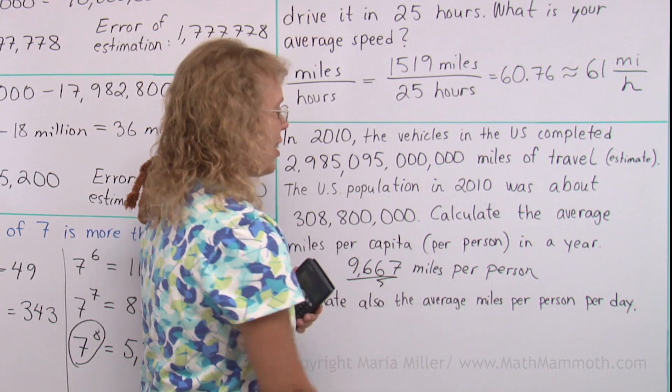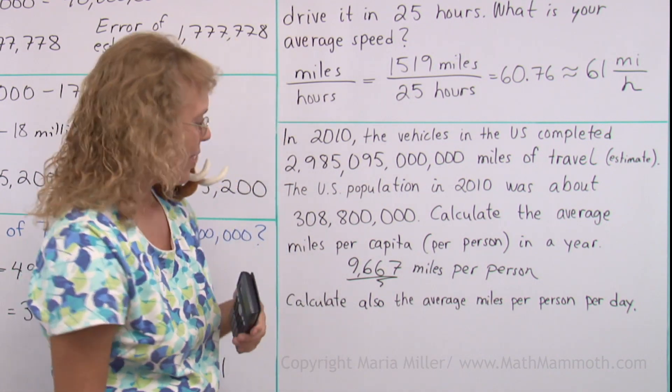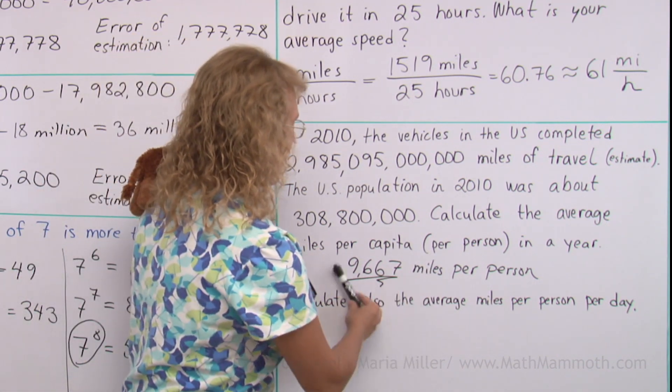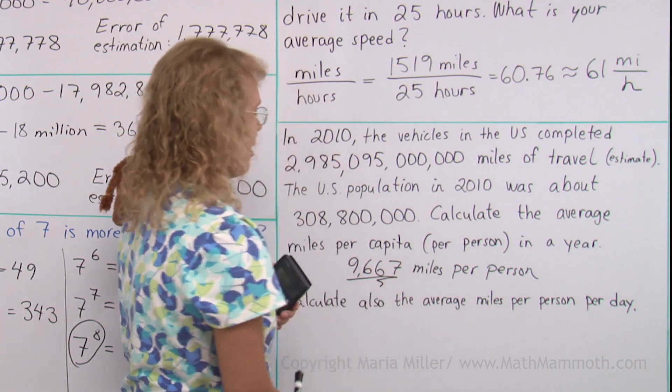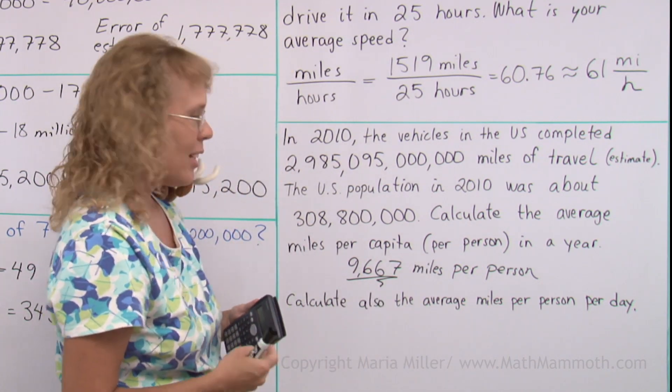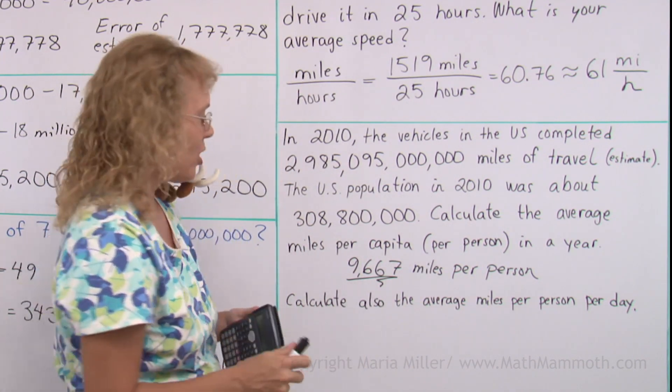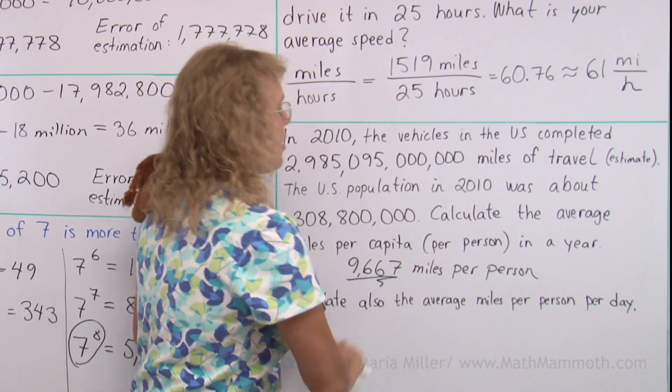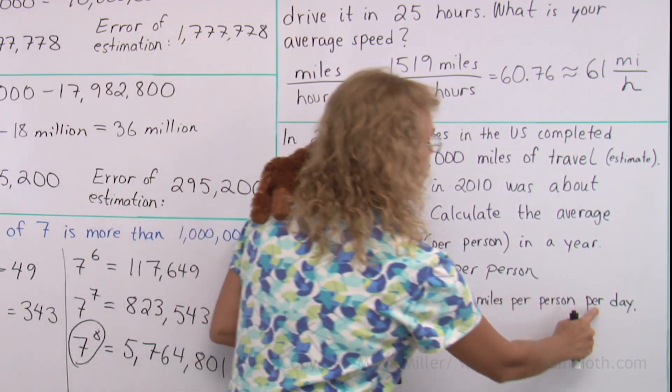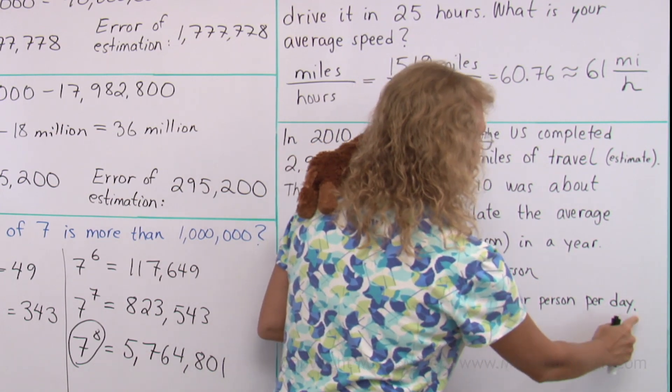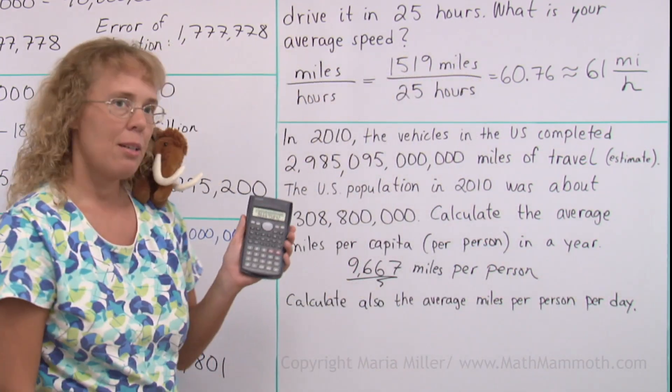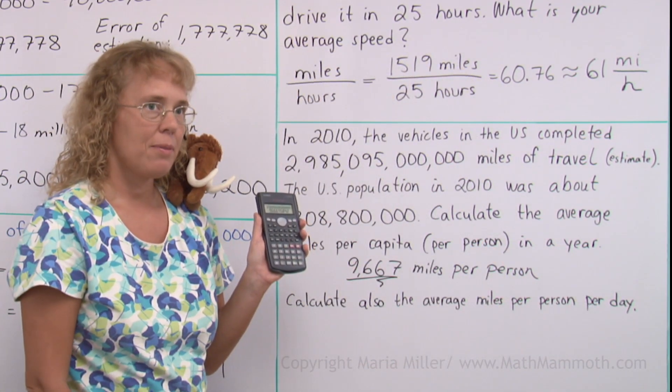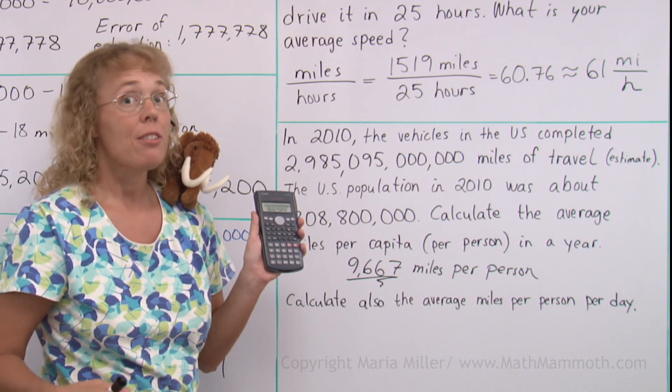Now calculate also the average miles per person per day. If everybody traveled this many miles per year, then in one day they would have traveled, on average, this many miles divided by the number of days. Because it is per day, it means division by the number of days. So I'll just take my previous answer here on the calculator and divide it by 365.